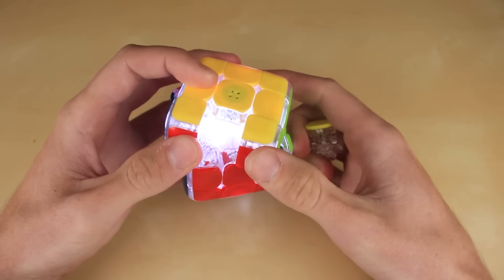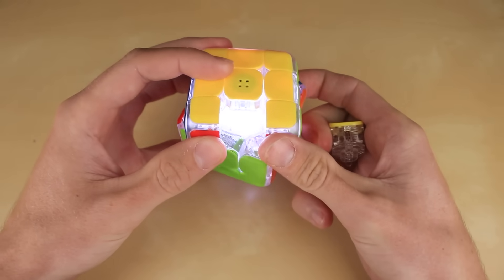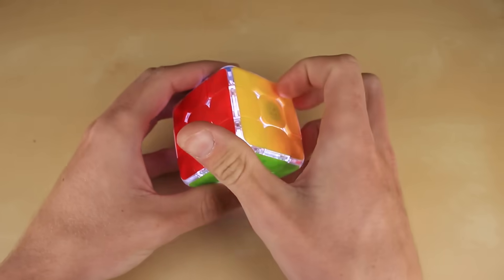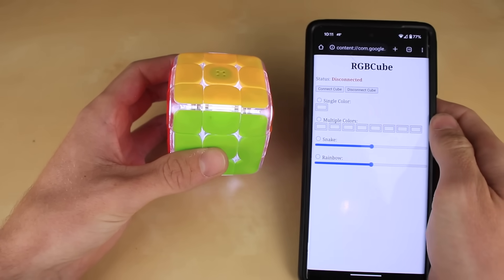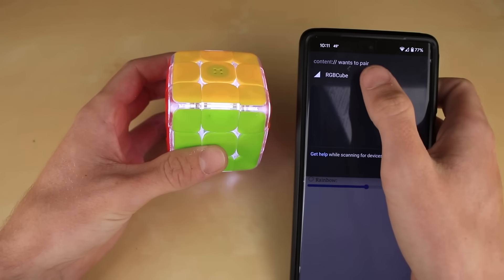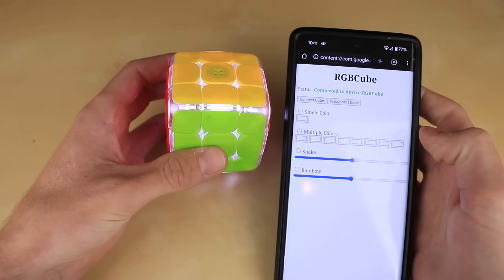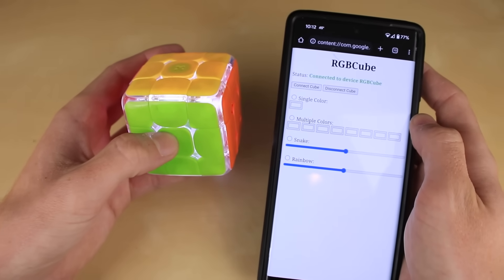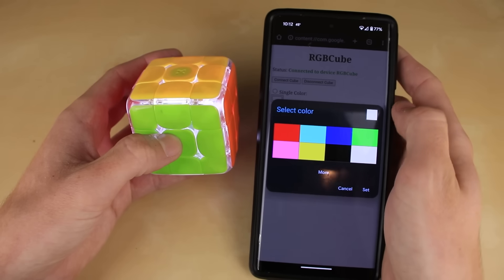But the cool thing is, we have not just one, but eight individual LEDs, and they're all RGB, so we can do whatever we want with them. So I designed this really simple app for my phone. It's really just a dummy webpage, but basically I can hit connect cube right here. We can select the RGB cube and pair it, and now if we want to set the whole cube to a single color, we can hit this color picker right here.